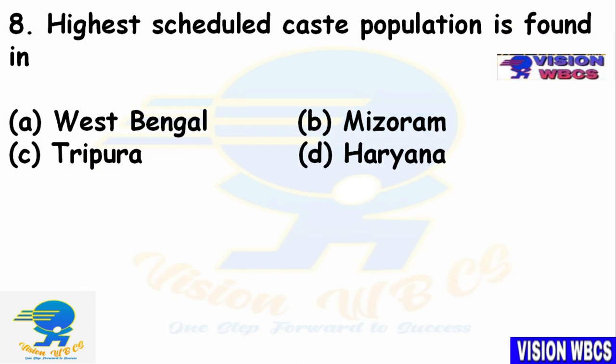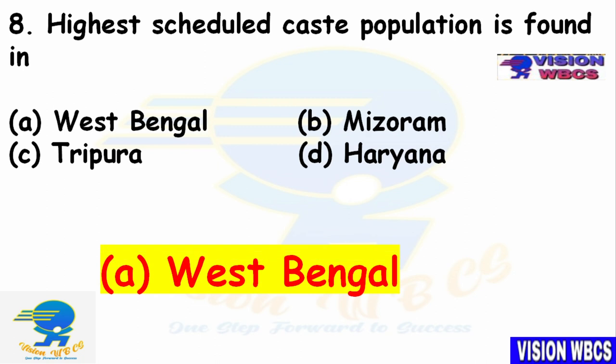Eighth question: Highest scheduled caste population is found in which state? Option A — West Bengal. Option B — Mizoram. Option C — Tripura. Option D — Haryana. Based on Census 2011 — since 2021 census has not been concluded — the right answer is Option A: West Bengal, which has the highest scheduled caste population among these four states.